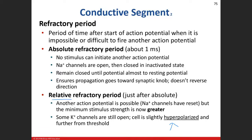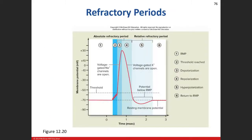The relative refractory period is brief but long enough for the neuron to reset. It occurs when the cell is hyperpolarized — so instead of needing a 15 millivolt change, you might need 18 or 20 millivolts because you might be at negative 75. You can see on the graph the absolute refractory period spanning from the onset of the first voltage-gated sodium channel opening through when the voltage-gated potassium channels are opening and about to close.